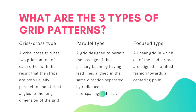What are the three types of grid patterns? The first type is called the crisscross — a crisscross grid has two grids on top of each other, with strips both parallel to and at right angles to the long dimension of the grid. The next pattern is called parallel: a grid designed to permit the passage of the primary beam by having lead lines aligned in the same direction, separated by radiolucent interspacing material. The last pattern is called focused: a linear grid in which all the lead strips are aligned in a tilted fashion towards a centering point.